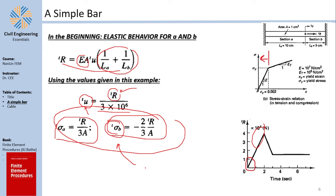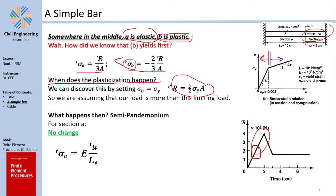When does this happen? You recall sigma_B equals a certain expression — just set sigma equal to sigma_Y and solve for R. The load that makes B yield is R = (3/2) × A × sigma_Y (with appropriate sign). What happens then? The real pandemonium occurs when both A and B are yielding, but that will not happen in this example, as I will explain.